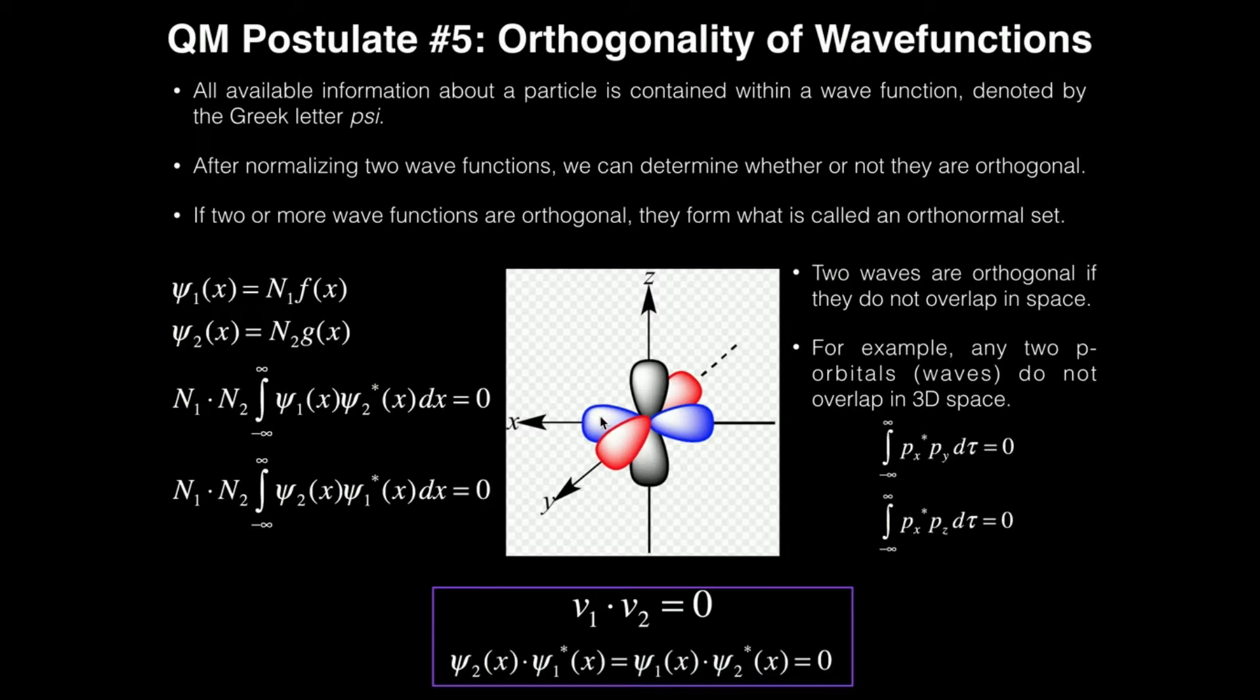For example, the px orbital in blue is oriented on the x-axis, whereas the py orbital in red is along the y-axis. Well, x and y are perpendicular to each other, just like x and z would be, and y and z. All three of these p orbitals are perpendicular to all the others.